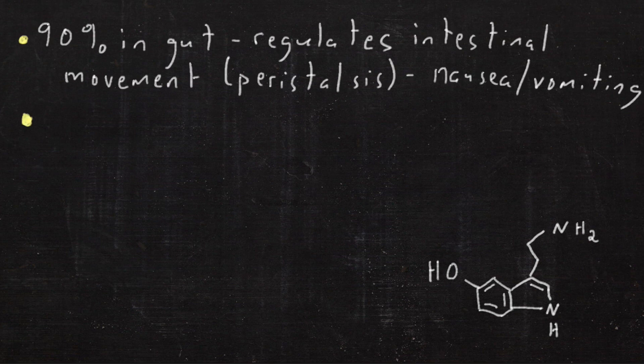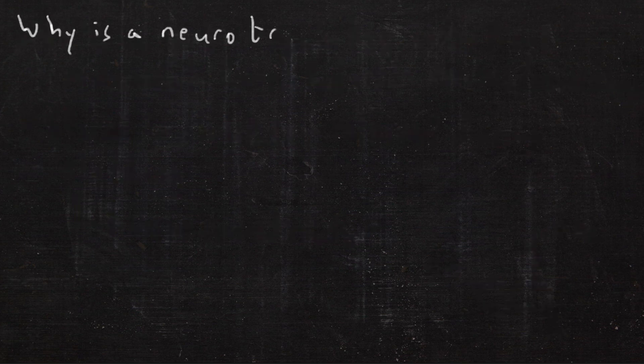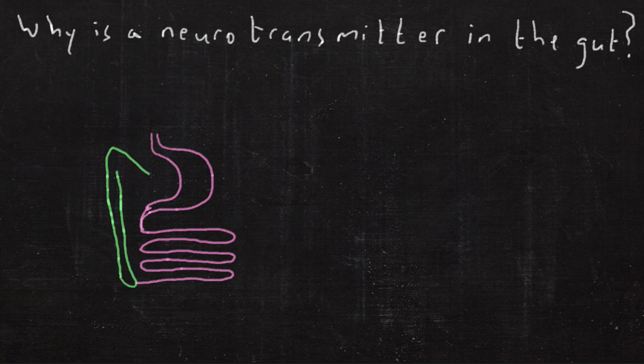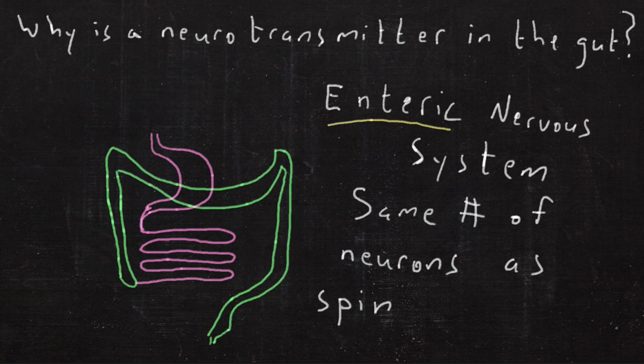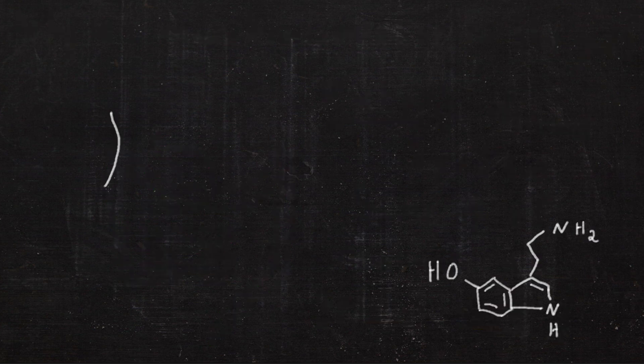90% of it's in your gut. Regulates intestinal movement. It also has a role in nausea and vomiting. It's also stored in platelets to join the clotting factor. So why is there a neurotransmitter in the gut? Well, your 30-foot-long tube has its own nervous system, which has the same number of neurons as the spinal cord.